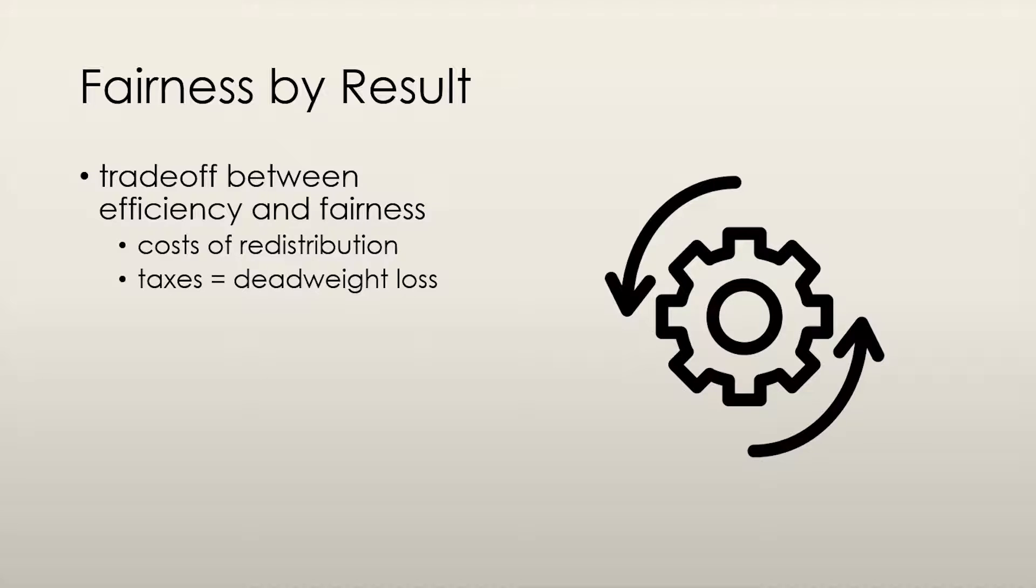In a perfect world, the idea of utilitarianism might work, but there is a trade-off between efficiency and fairness as defined by result. In the real world, there are a lot of costs associated with redistributing income, especially administrative costs.